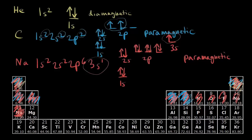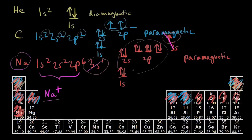Finally, let's consider the sodium ion, Na⁺. The sodium atom loses one electron to form the ion, so we lose the 3s1 electron. The electron configuration for Na⁺ becomes 1s2, 2s2, 2p6. Now all electrons are paired, which means the sodium ion is diamagnetic — even though the sodium atom is paramagnetic. It all comes down to writing electron configurations and applying the definitions of paramagnetic and diamagnetic.